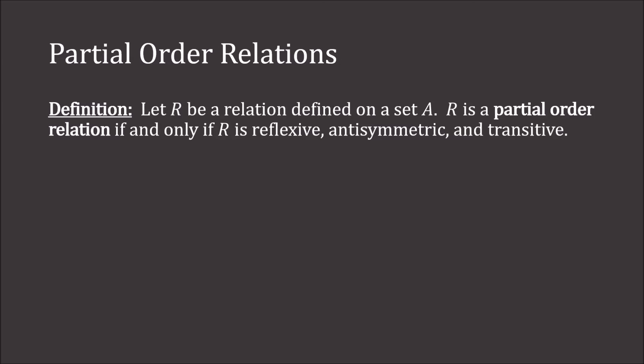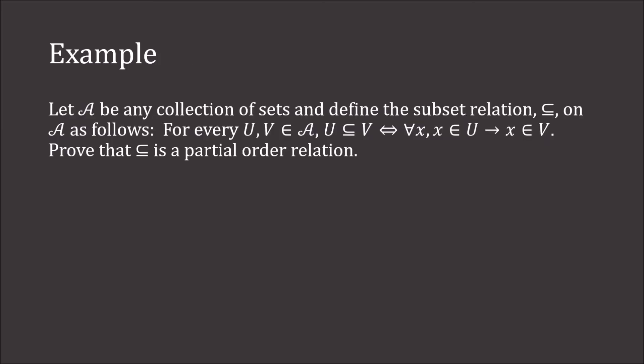One common example of a partial order relation is the subset relation. For any collection of sets A, the subset relation is defined as: for every U, V in A, U is a subset of V if and only if for all X, if X is in U then X is in V. We will prove this is a partial order relation by proving it is reflexive, anti-symmetric, and transitive.